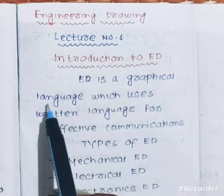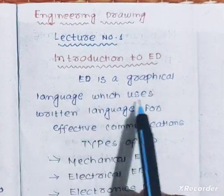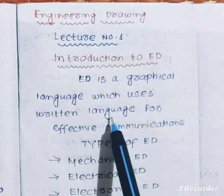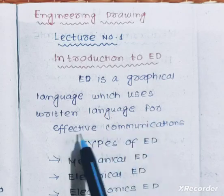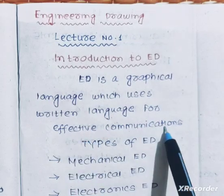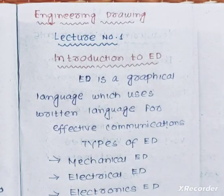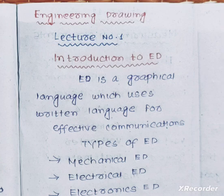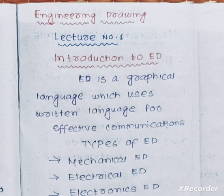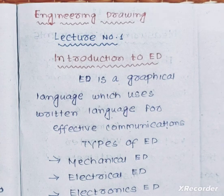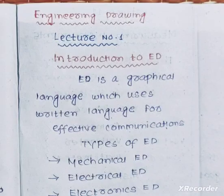Engineering drawing is a graphical language which uses written language for effective communication. Engineering drawing is a graphical language where you can make a written form, make a drawing, and make a communication part. That is known as your engineering drawing.